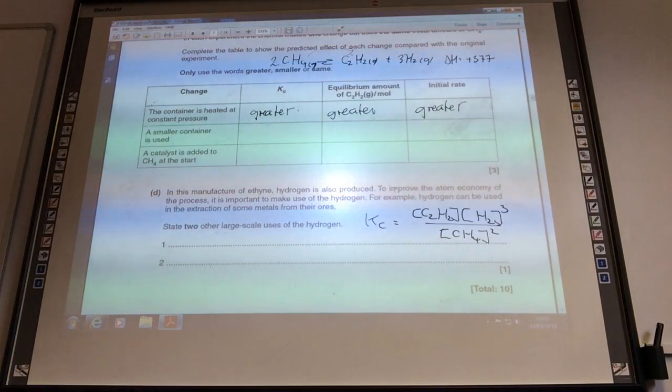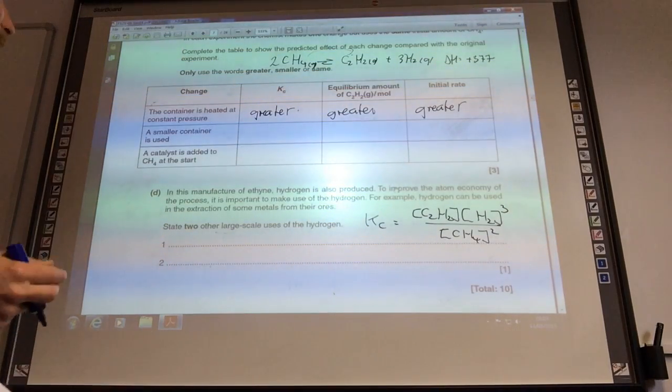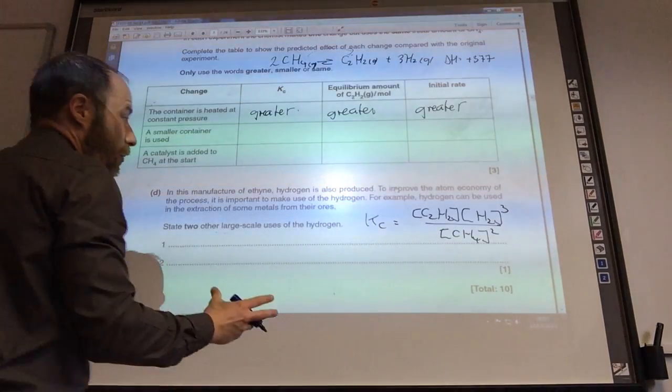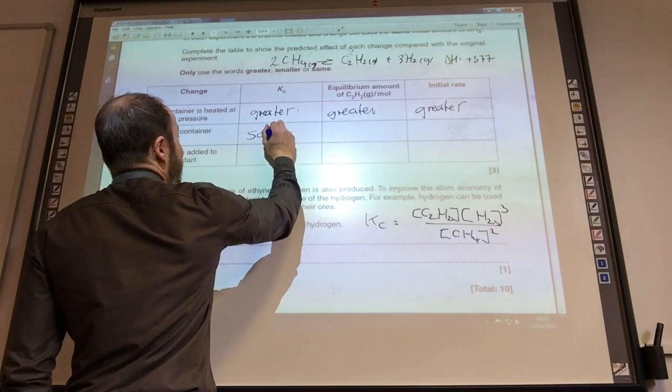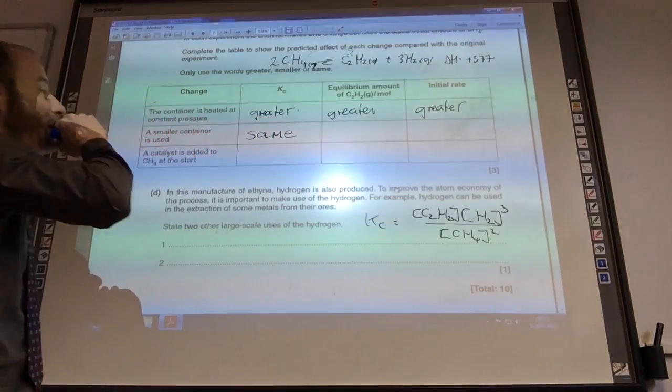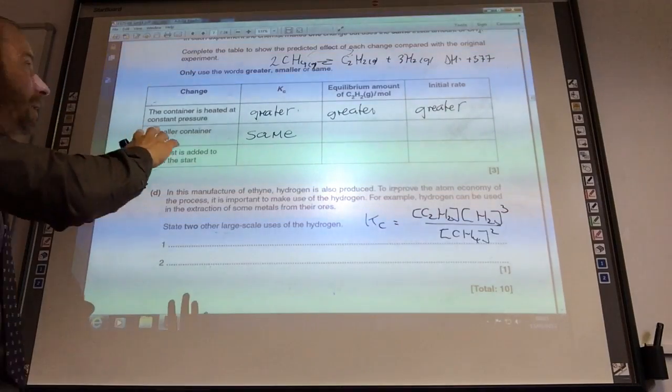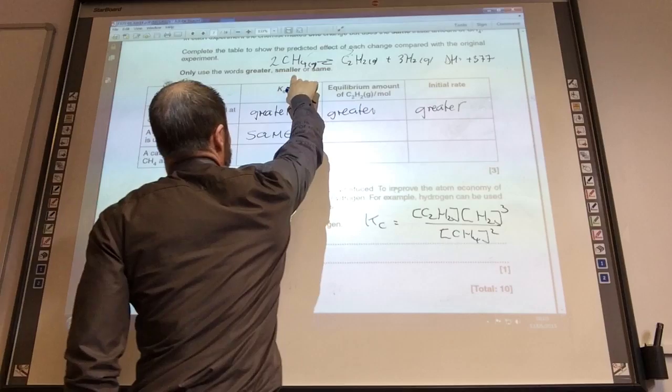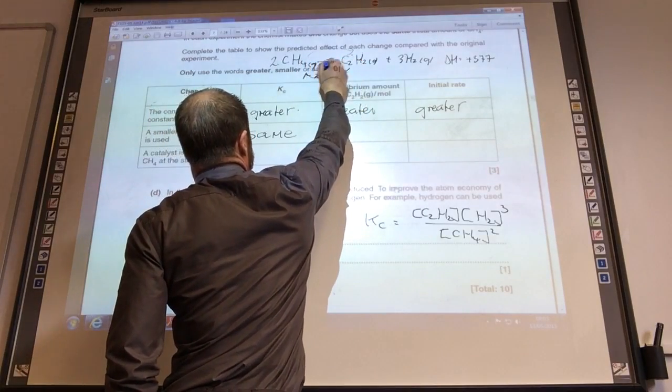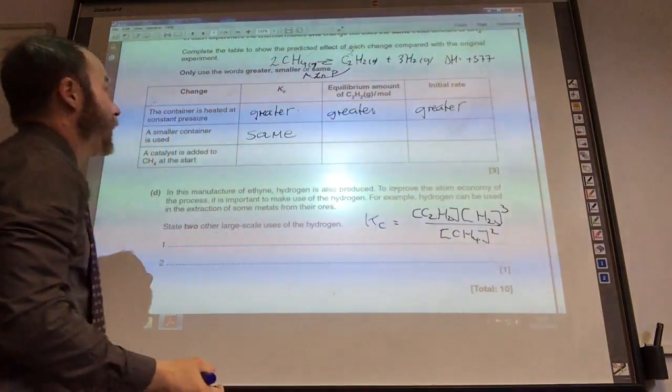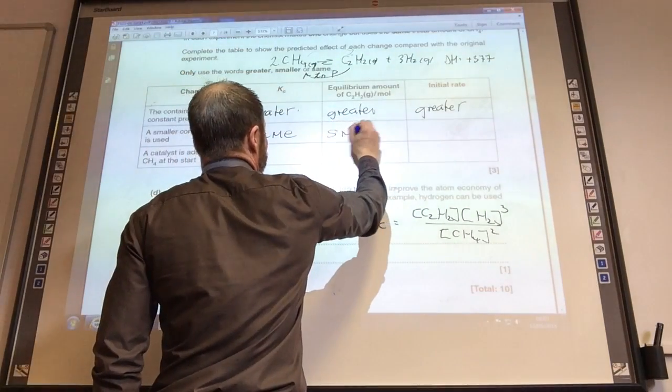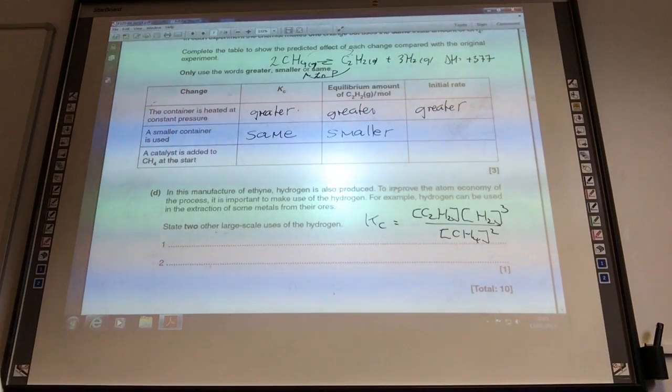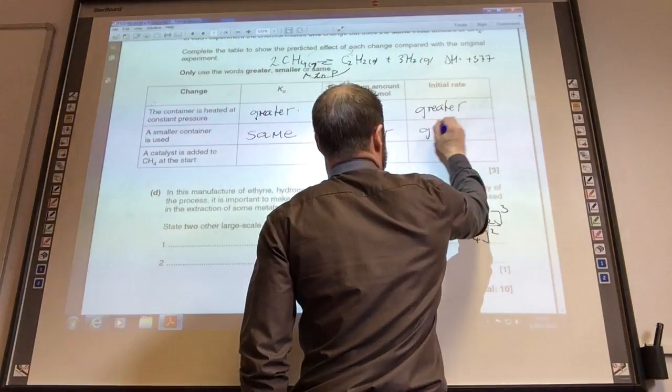A smaller container is used. Okay, so if a smaller container is used, that means I'm effectively changing pressure. Does pressure affect Kc? No way. So Kc will be the same. If I've got a higher pressure, which way will it shift? Well, I've got four moles of gas on this side, two moles of gas on that side. So increased pressure shifts it that way. So the equilibrium amount will actually be smaller. The initial rate, the pressure is greater, and therefore the rate will be greater.